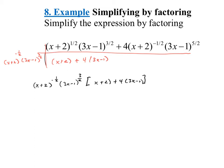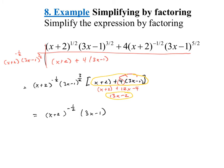This is not yet simplified, so I still have work to do. I'll distribute the 4 through: 4 times 3x is 12x, and 4 times negative 1 is minus 4, giving x plus 2 plus 12x minus 4. Combining like terms: x plus 12x is 13x, and 2 minus 4 is minus 2. So the entire inside simplifies to 13x minus 2.